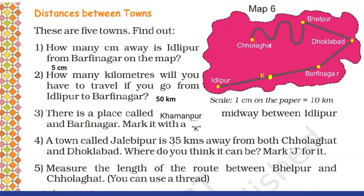Fourth question: a town called Jalebi Rorish is 35 kilometers away from both Cholagat and Doklabad. Cholagat is here and Doklabad is here. So there is one place between these two which is 35 kilometers from each — meaning it is the midpoint between Cholagat and Doklabad. Now 35 kilometers means 3.5 centimeters on the map. The distance from Doklabad to Bailpur measured with the scale is 2.5 centimeters, so one more centimeter downward gives 2.5 + 1 = 3.5 centimeters. So somewhere here you mark Jalebi Rorish.